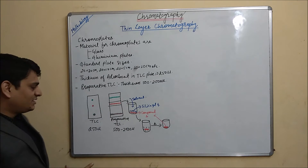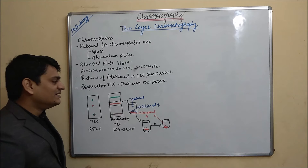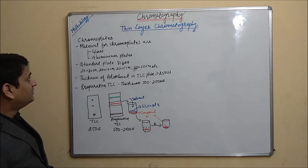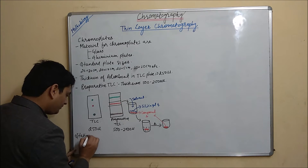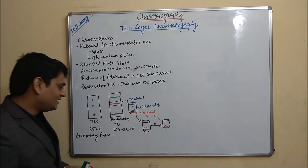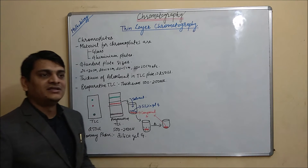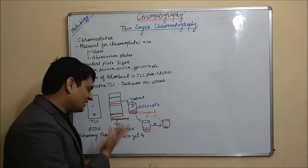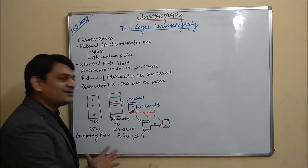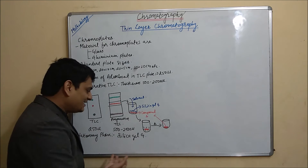So this is the purpose of preparative TLC — as in TLC it is for qualitative or quantitative analysis only, but by using preparative TLC we can isolate our compound. Now coming to the next part, which is the stationary phase used in TLC. I am giving some details about silica gel only, as I have already discussed stationary phases in my previous TLC video.